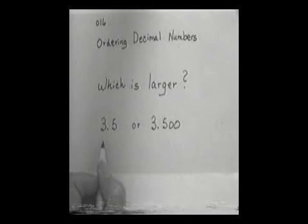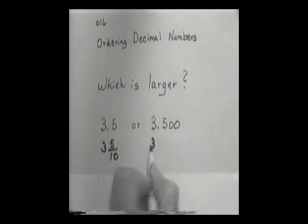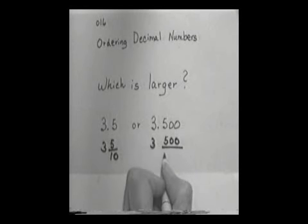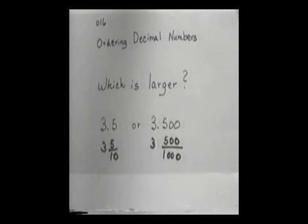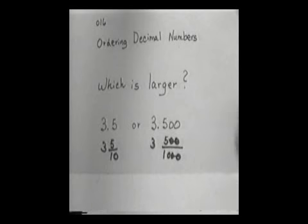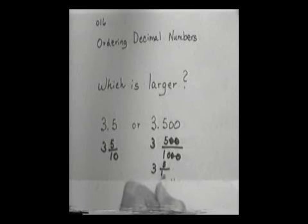If we change this back to a fraction, this is actually 3 and 5 tenths. This one is 3 and 500. It's got three decimal places, so it's thousandths. So we have 3 and 5 tenths and 3 and 500 thousandths. If we wanted to reduce this one, one thing we could do is knock two zeros off the top and two zeros off the bottom. As soon as we did that, we'd have 3 and 5 tenths. And then the two would look exactly the same.